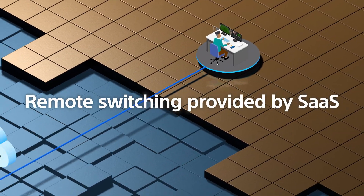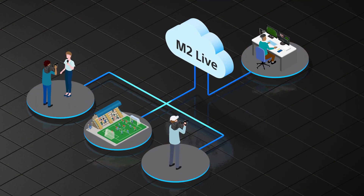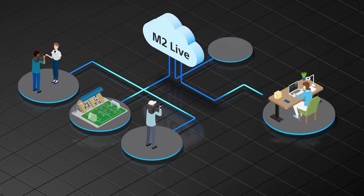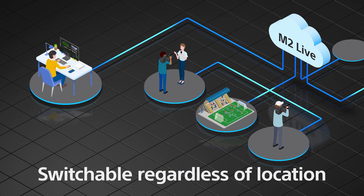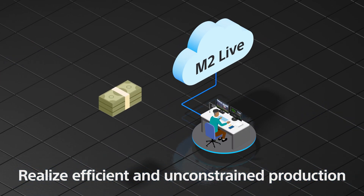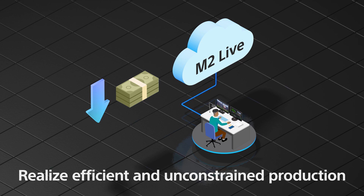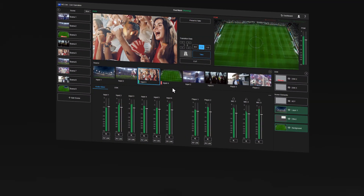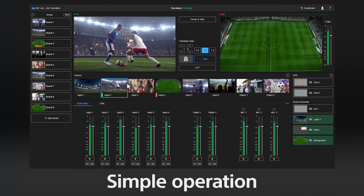Remote switching is provided as a service via a simple logon. Because the software-based switcher is built in the cloud, switching is possible regardless of location if you have a connection to the network. With lower maintenance costs and no need for fixed assets, this ensures efficiency and freedom of video production.